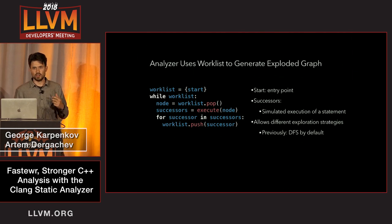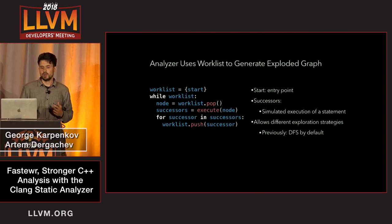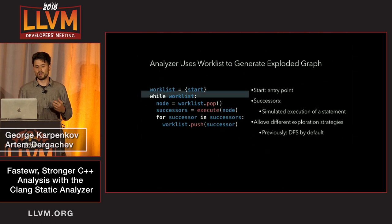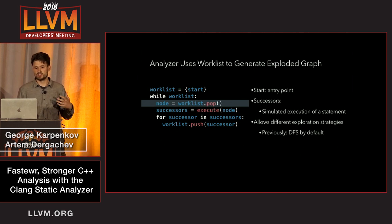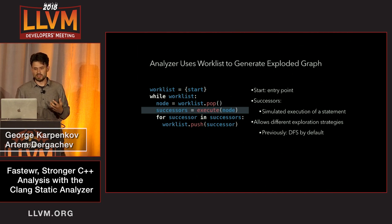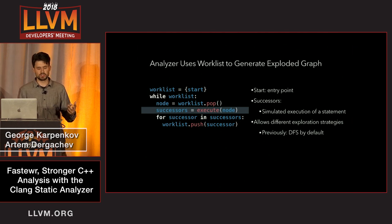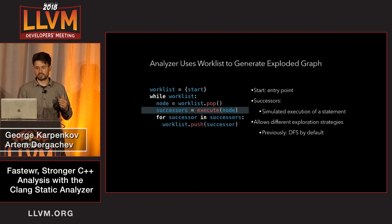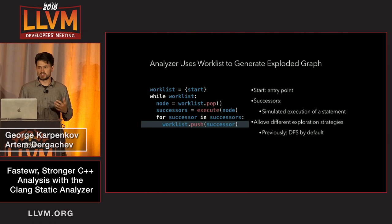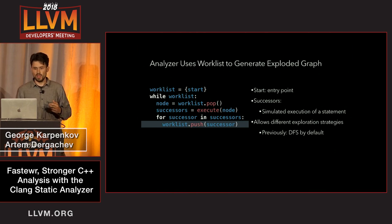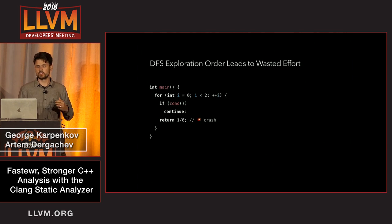To understand what's going on, a bit of background is needed on how the analyzer generates the exploded graph. The analyzer uses a worklist algorithm — a simple classical worklist algorithm where we start at the start node, and while the worklist is not empty, we take one item out and generate the successors of that node. Successors are simply simulated by executing a single statement and seeing what states we could possibly end up with. The successor states are then added back to the worklist.